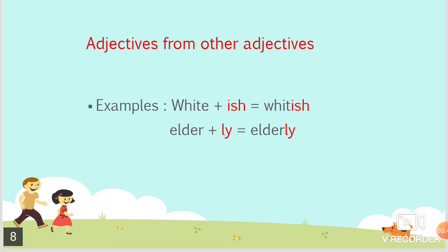Adjectives from other adjectives: for example, white with -ish becomes whitish; elder with -ly becomes elderly.